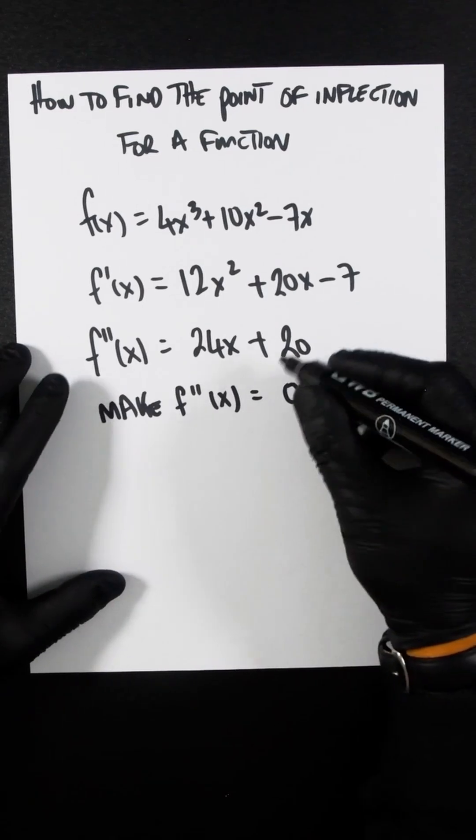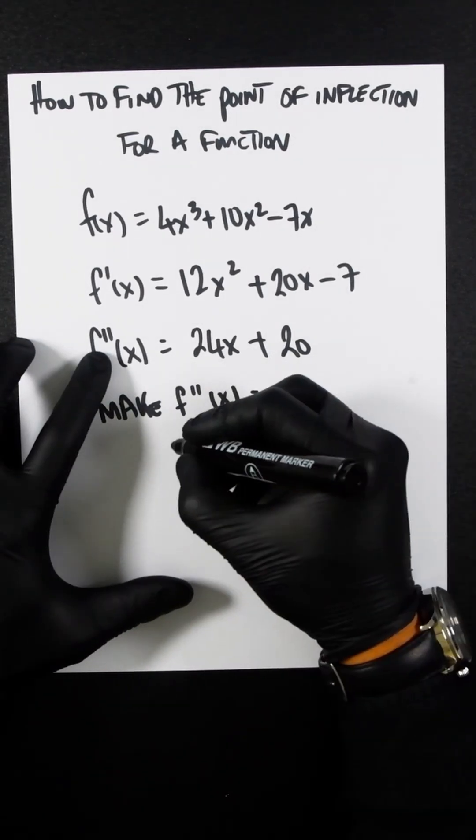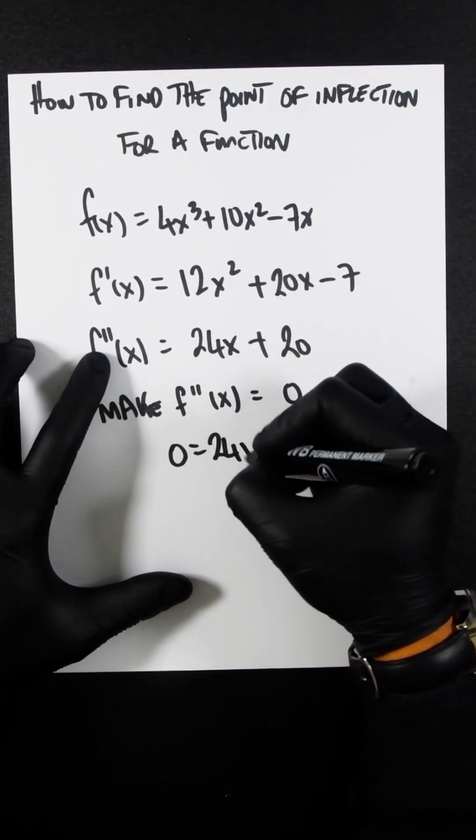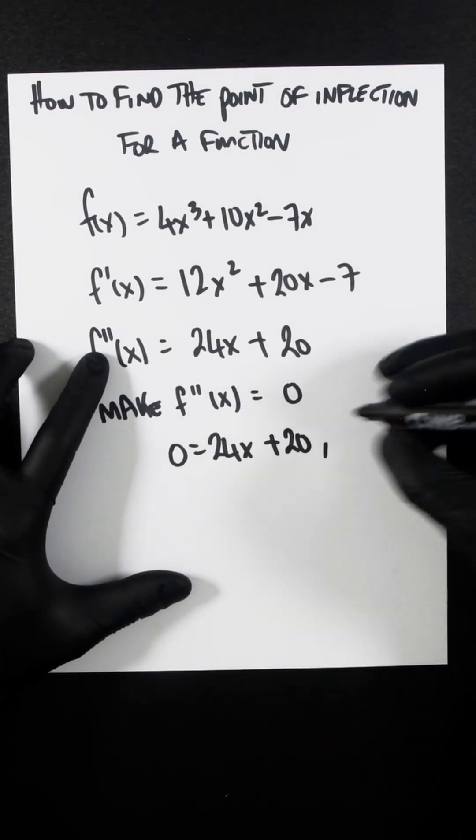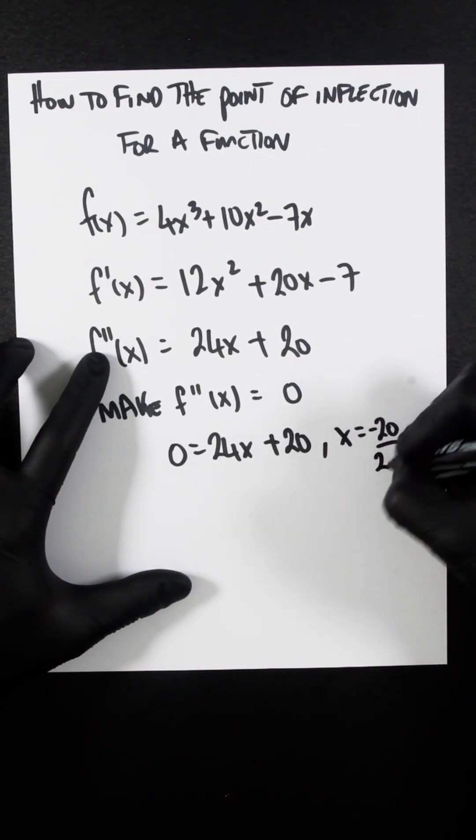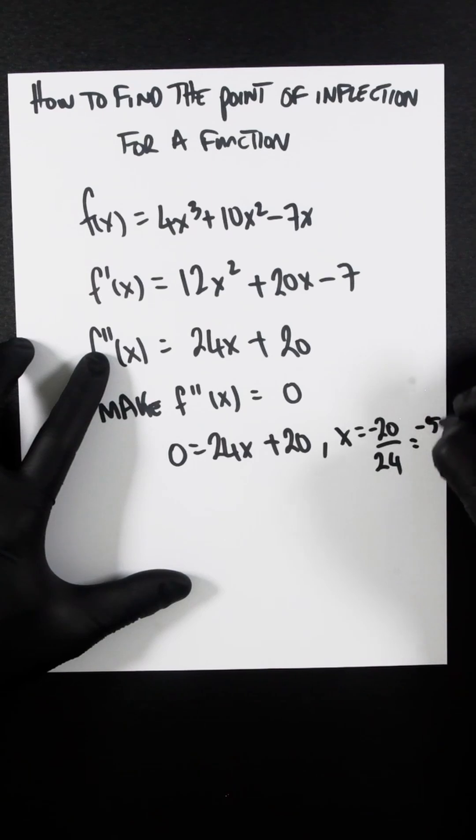Now we make f''(x) equal to 0. So 0 = 24x + 20. If we rearrange, you're going to get x = -20/24, which equals -5/6.